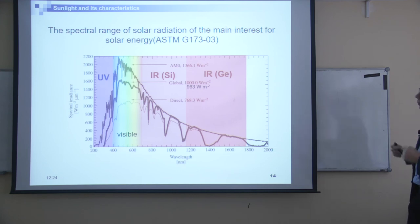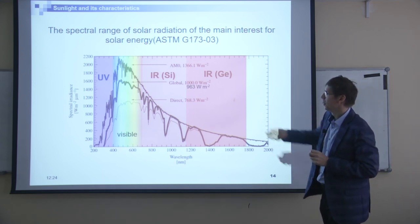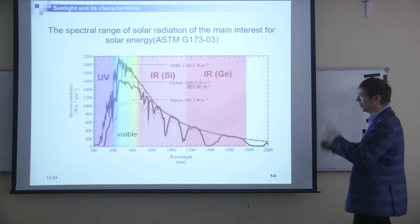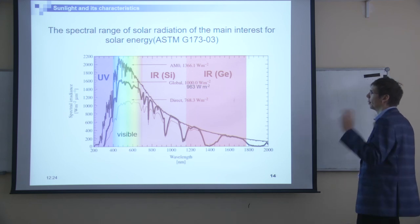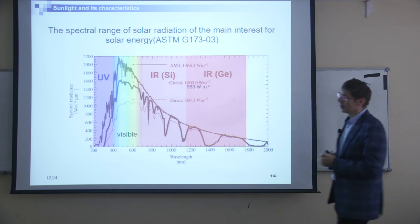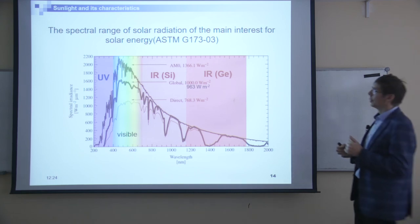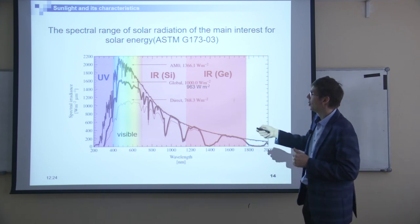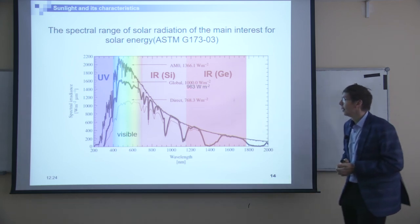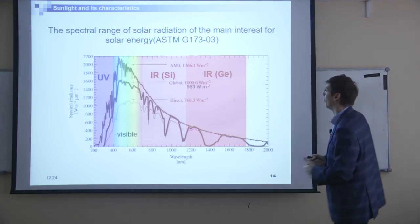And the last thing for this picture: if we take this spectrum and integrate it to get the total incident power, we can see that for AM0 we have 1366 W/m², for AM1.5G we have a little bit less — the correct value is actually just under 1000 W/m² — and for the direct light AM1.5D we have even less.